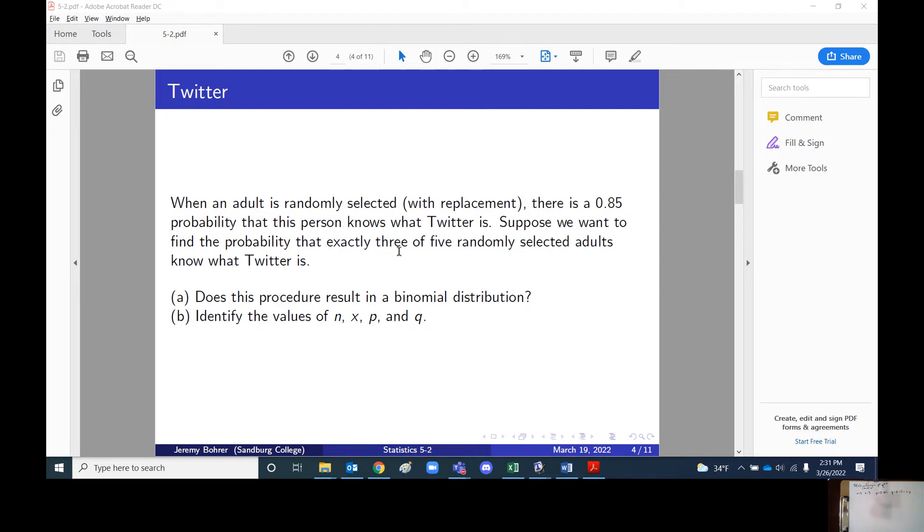The trials are independent. We're doing this with replacement, which we often say is not independent, but we're looking at five randomly selected adults and there are billions of adults in the world, and if we select five of them at random, there is very little chance that we're going to draw the same person twice.